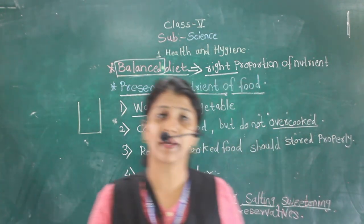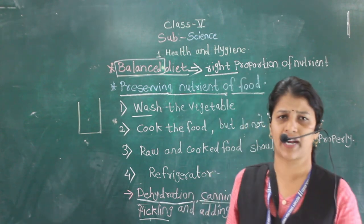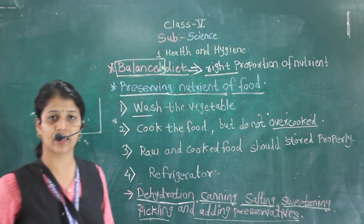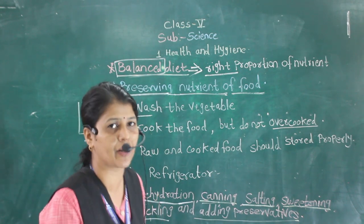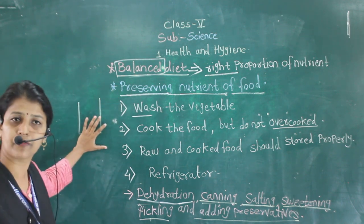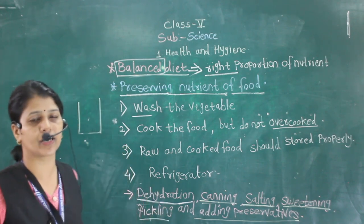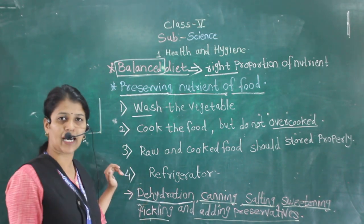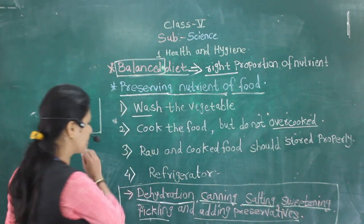Pickling means different types of pickles. Your mother might be preparing different pickles, adding various chemicals. Adding preservatives means adding different types of preservatives to keep food for a longer period of time. So these are some methods of preserving nutrients: washing, cooking without overcooking, storing raw and cooked food properly in the refrigerator or a clean place.